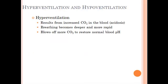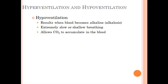Breathing is an important part of maintaining homeostasis and the pH of the blood. Our blood has a pH around 7.35 — slightly alkaline. If blood starts to get too acidic, we call that acidosis, and we'll start hyperventilating to get rid of CO2 and restore normal pH. The opposite is hypoventilation, when our blood becomes too alkaline, so we breathe more slowly to build up CO2 and bring pH back to normal.